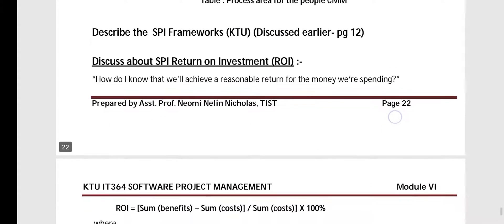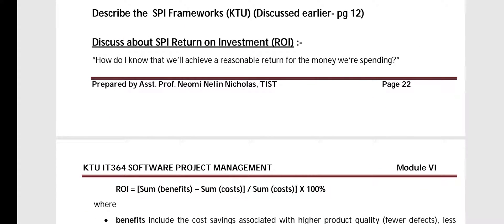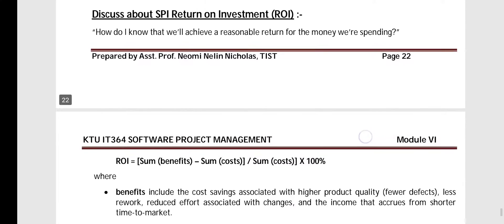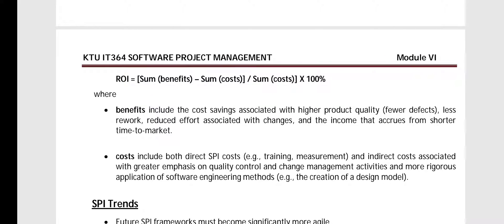Next is to describe SPI frameworks — a K2 question already discussed earlier. Then, SPI return on investment or ROI: ROI equals the sum of benefits minus sum of costs, divided by the sum of costs, multiplied by 10%. Benefits include cost savings associated with higher product quality, less rework, and reduced efforts. Costs include both direct SPI costs and indirect costs.